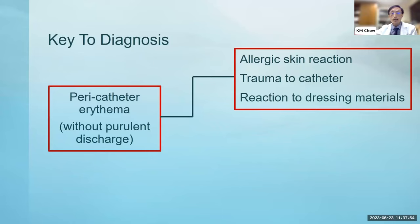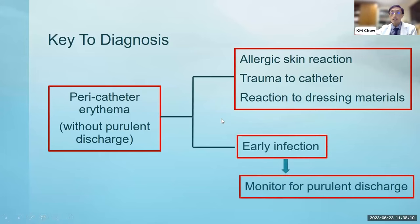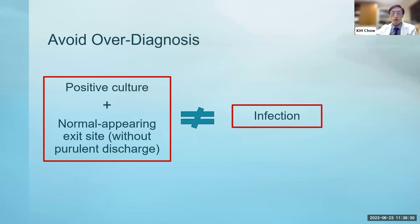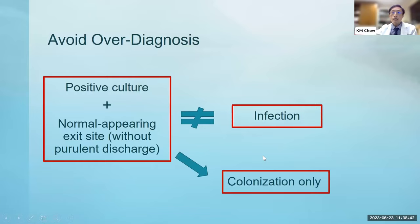If there's pericatheter erythema without purulent discharge, it can be an allergic skin reaction, trauma to the catheter, or a reaction to dressing materials. We cannot say it's definitely not infection, but it is not definite. If you are worried about early infection, monitor for any subsequent development of purulent discharge. On the other hand, a swab with a positive culture result but a totally normal-looking exit site with no purulent discharge does not mean there is infection — this is most likely just colonization of the skin. We should not routinely swab the exit site and call it infection even if the result is so-called positive.